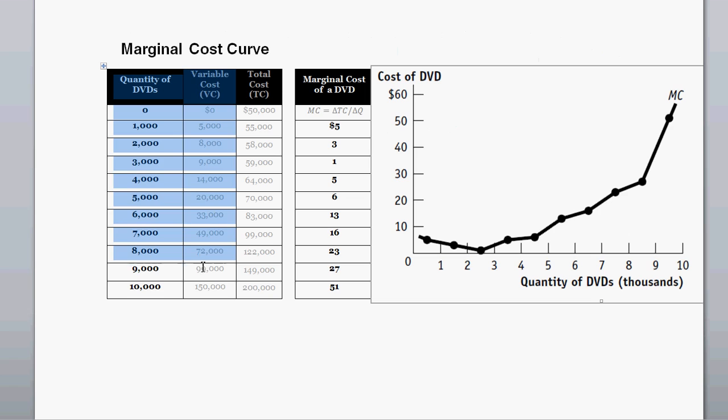Let me show you what we found there. We were given these two columns of information: quantity of DVDs produced and the variable cost associated with each one. We were also given info about fixed costs, which was $50,000. Given that, we can calculate total cost. And then given total cost and quantity produced, we can calculate marginal cost.